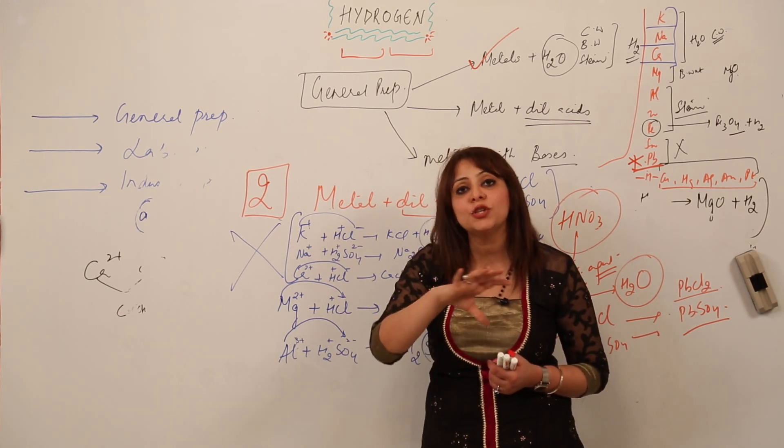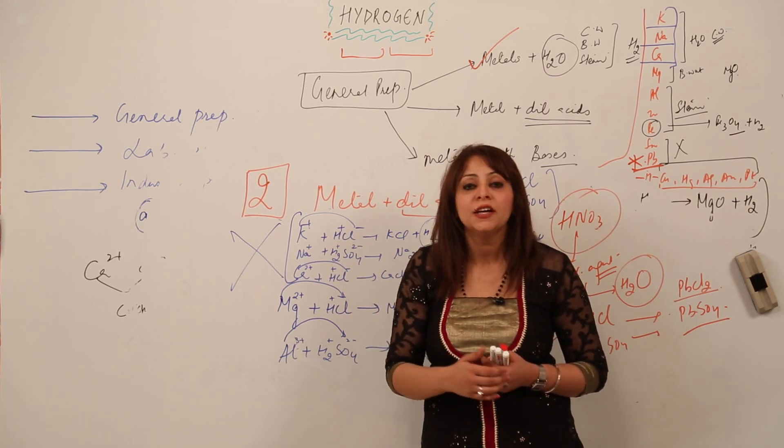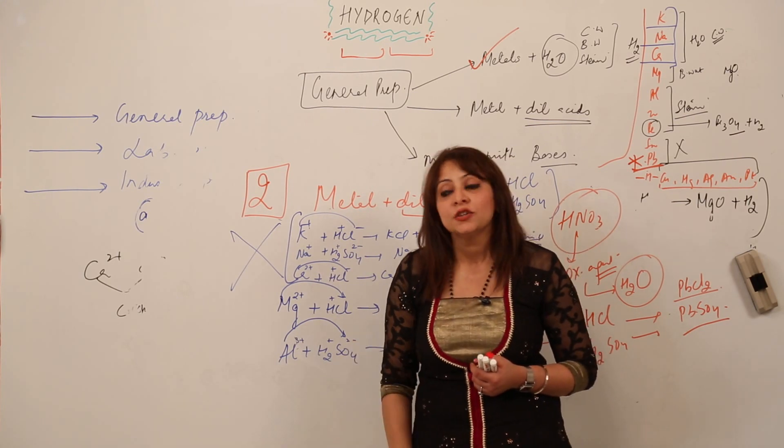We cannot use lead because only the surface is reacting, and after that it forms a layer which does not allow the lead to react further. Most of the lead remains unreacted, so lead cannot be used.